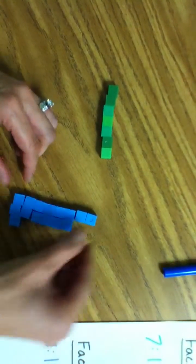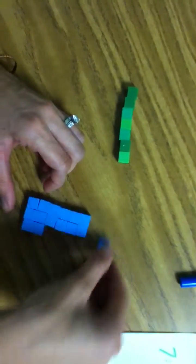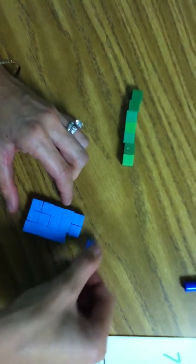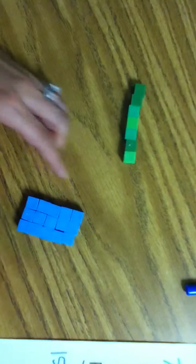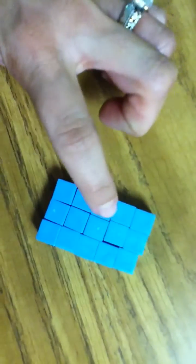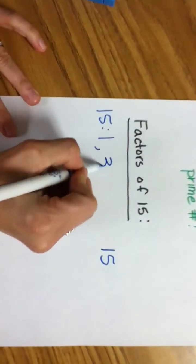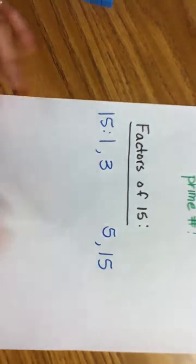So, we'll try a 3. Does that one work? Woohoo! I have 1, 2, 3, 4, 5 by 3, so my 2 factors will be 3 times 5.